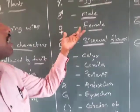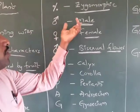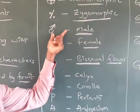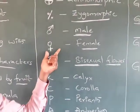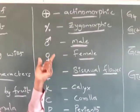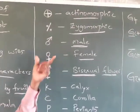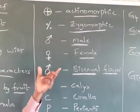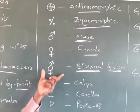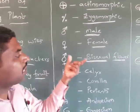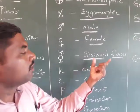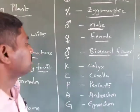Unisexual flowers are either male or female in some species. But a flower which has both androecium and gynoecium is called a bisexual flower.